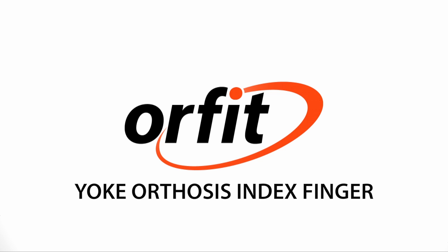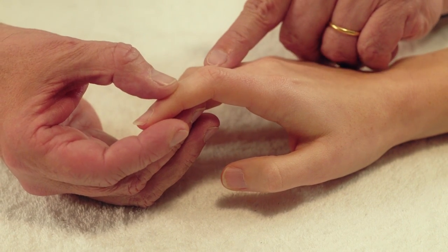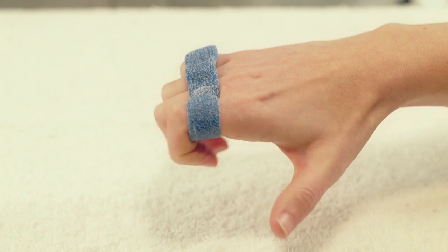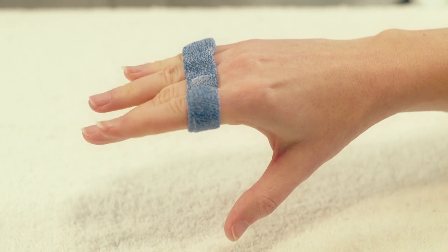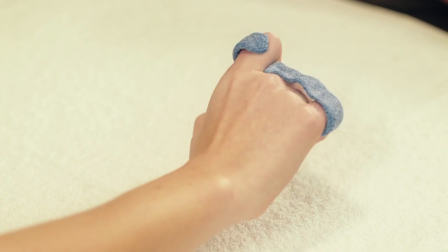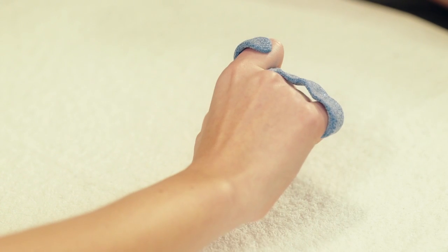Yoke Orthosis Index Finger. Here we will demonstrate a yoke orthosis for the index finger. This orthosis can be used in a post-operative extensor tendon rehabilitation protocol. It can also be used to restrict motion of one PIP joint and to encourage motion at another PIP joint.